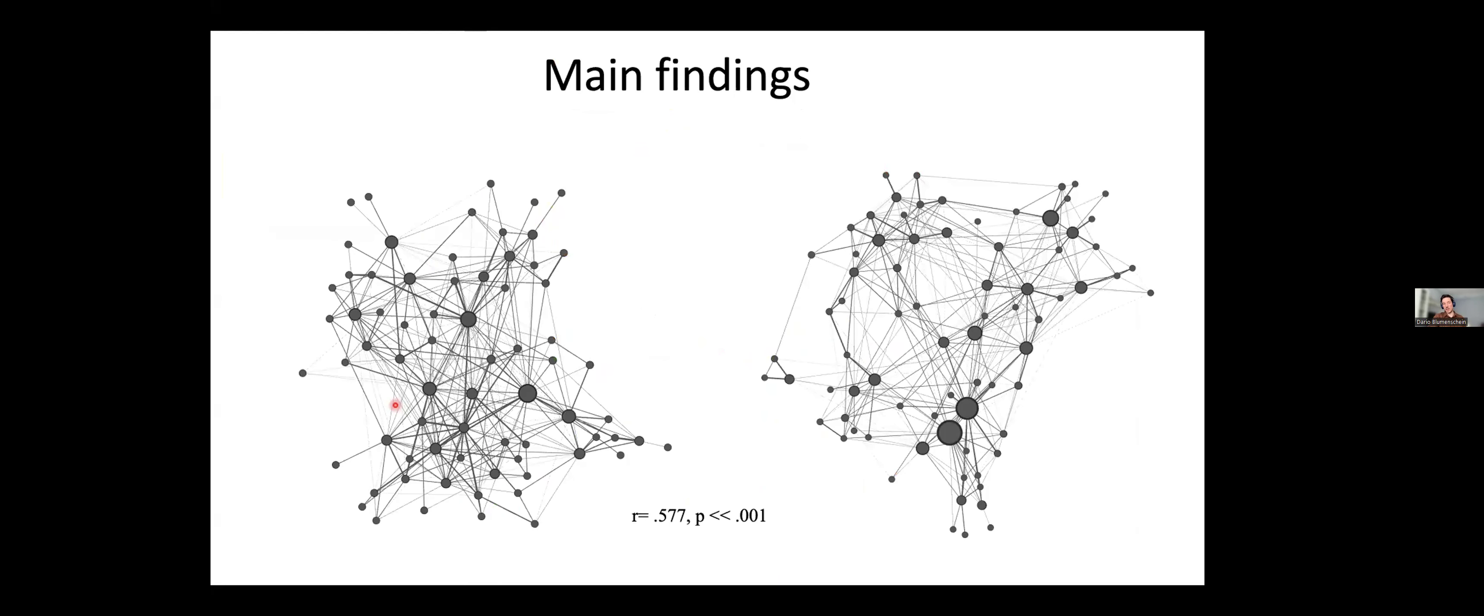And these are basically the main findings. Because we asked them to indicate both teaching-related networks and research-related networks, we have ended up with two different networks. But we have realized that we have moderate to strong correlation between these two networks, which means that if you and I talk together about teaching-related things, we are very likely to talk about research-related things. So there is this teaching-research nexus that also became quite interesting and something that we can discuss a bit later.